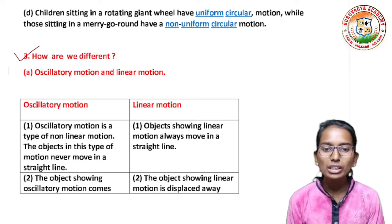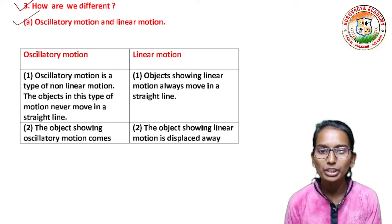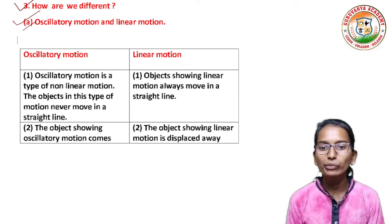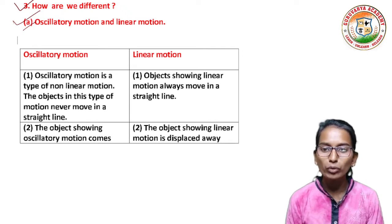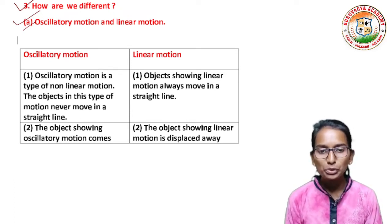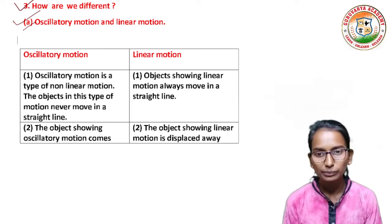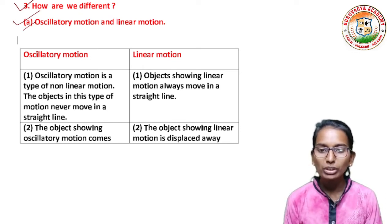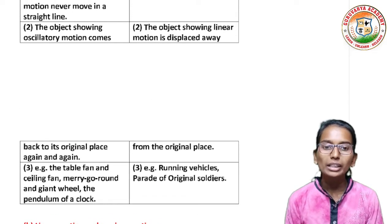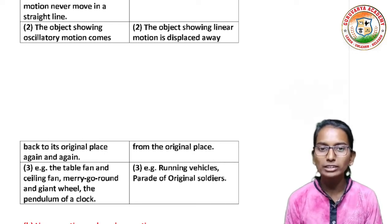Now we have to differentiate between oscillatory motion and linear motion. Oscillatory motion is a type of non-linear motion; objects in this type of motion never move in a straight line. In linear motion, objects always move in a straight line. The object in oscillatory motion comes back to its original place again and again, whereas in linear motion, the object is displaced away from its original place.